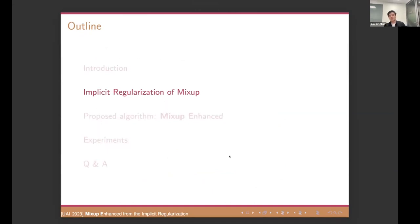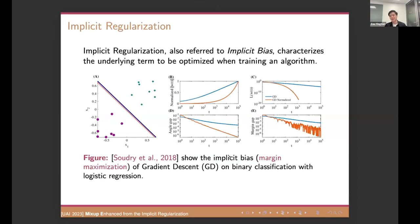Okay. So now let's move to the next part. Our main motivation is rooted in the implicit regularization. So I will give you the short idea. So what is the implicit regularization? Sometimes it's called implicit bias. It characterize the underlying term to be optimized during the training phase with a specific algorithm. Even you didn't define this term explicitly in your objective function. So here I will show an example, which is introduced by Daniel Soudry in 2018.